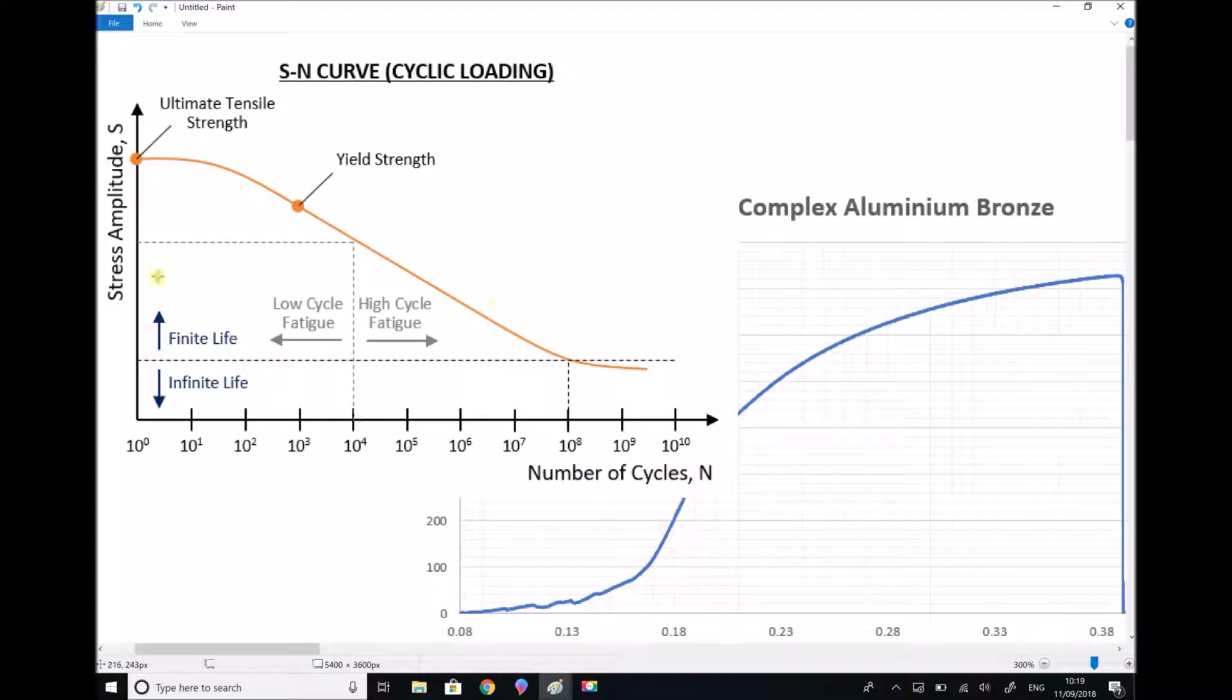Now on the other axis we have the stress amplitude. Much the same as with creep, the size of the stress or the amplitude of the stress here on our y-axis is going to directly impact on the number of cycles that can be done before failure.